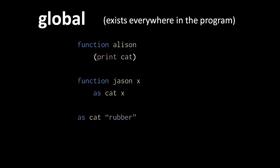A thing which is global in code is the opposite of local. A thing which is global exists everywhere throughout the program and so can be used anywhere. In Pidgin, functions are always global, and any variables you create outside of a function are also global.